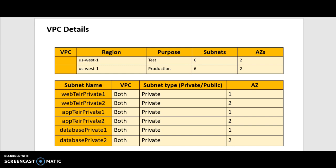They'll each have six subnets and two availability zones. The subnets will be as follows: two for the web tier, two for the app tier, and two for the database tier. They will be distributed equally amongst the two availability zones and will all be private.